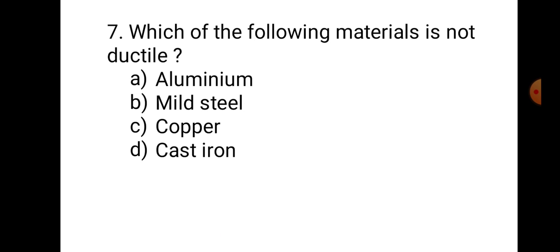Question number 7: Which of the following materials is not ductile? A. Aluminium, B. Mild steel, C. Copper, D. Cast iron. In some MCQs, you have to use the method of rejection. Aluminium is ductile, mild steel is ductile, copper is ductile — so none of those. The only material which is not ductile is cast iron. Therefore, the correct answer is D. Cast iron.